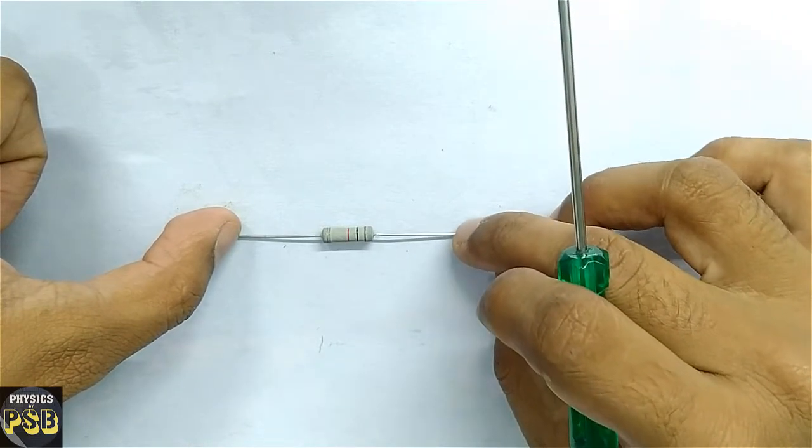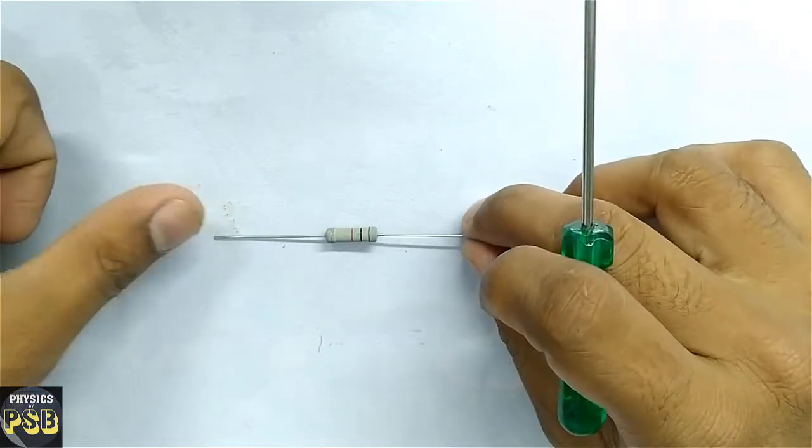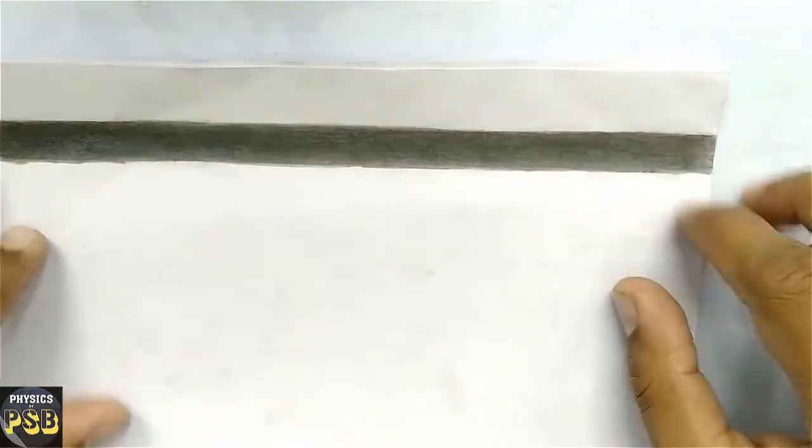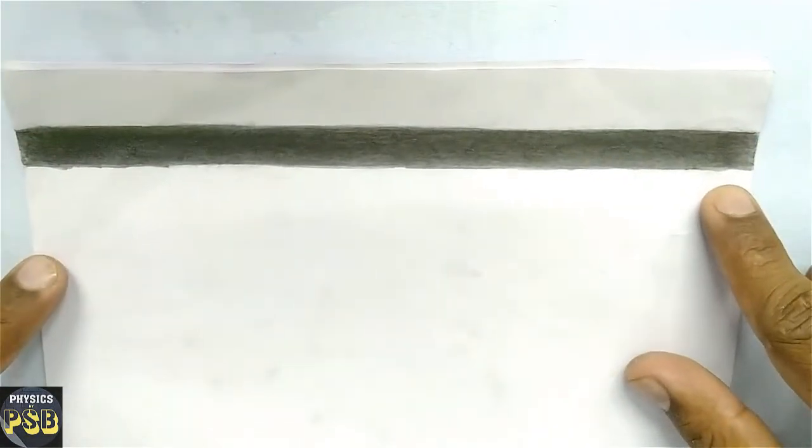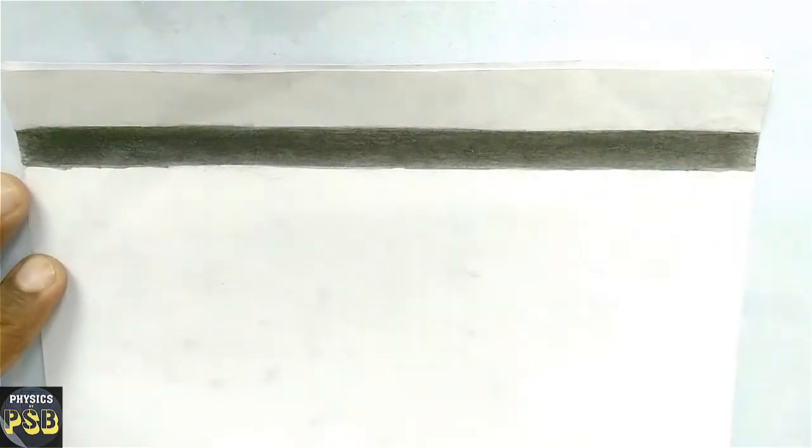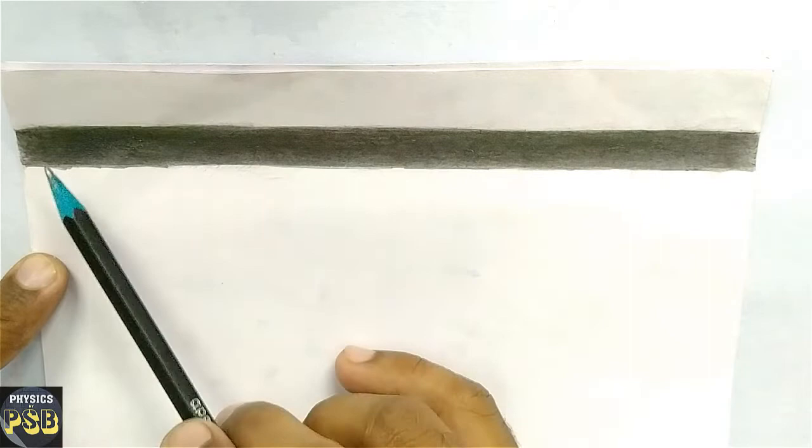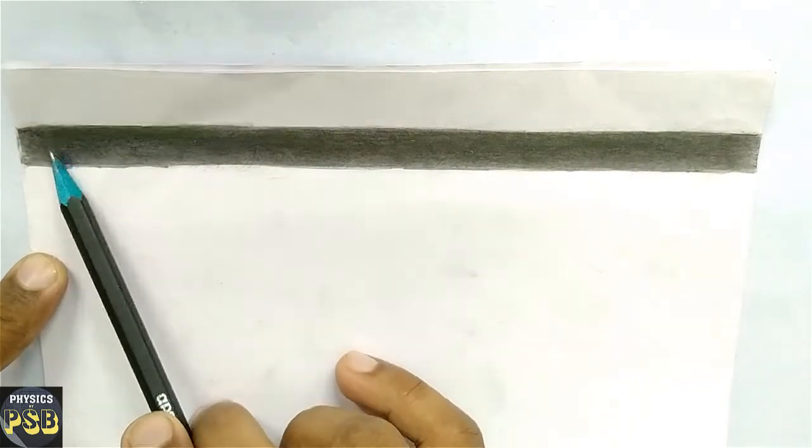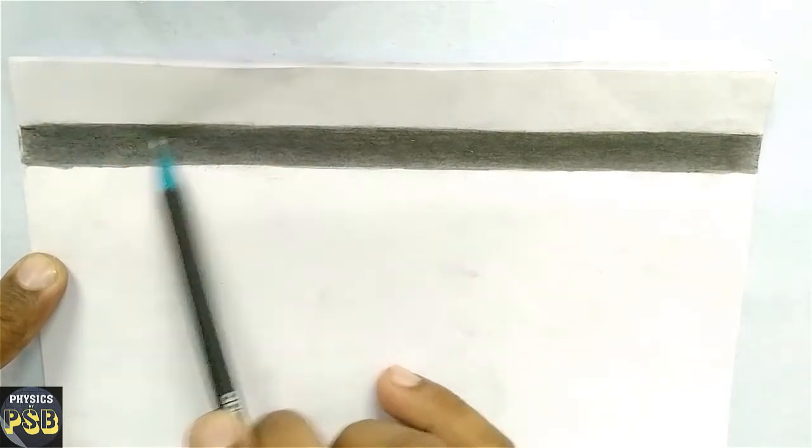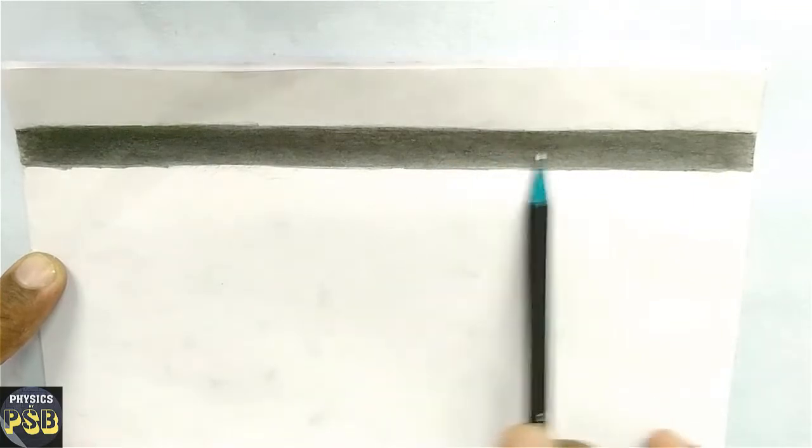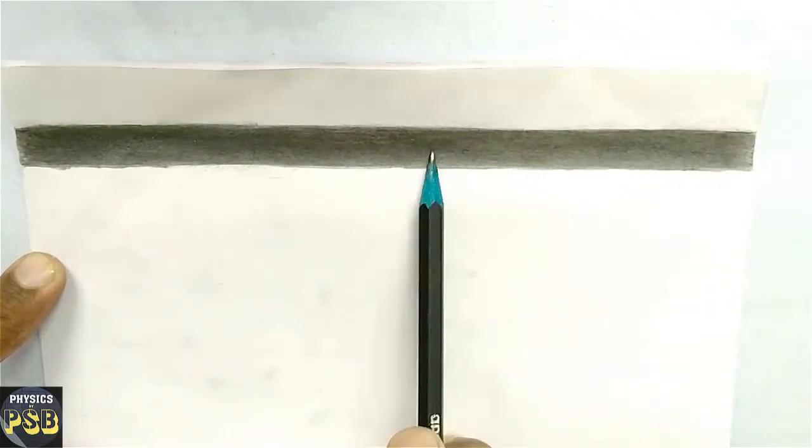I am going to demonstrate the working of this kind of resistor with the help of a simple experiment. For that, I have taken an A4 sheet. On this A4 sheet, I have made a track by scribbling using a pencil.